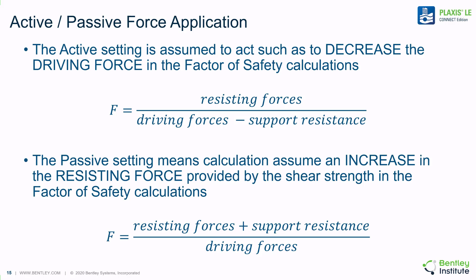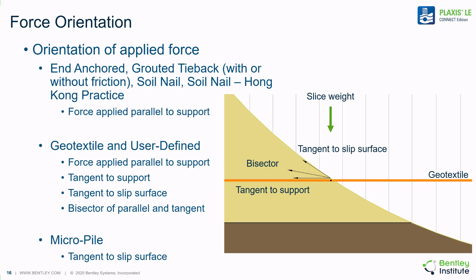Each loading condition may be specified as active or passive in the respective dialog. The active or passive specification determines whether the support resistance is utilized in the equation to decrease the driving forces — i.e., it is active — or to increase the resisting forces — i.e., it is passive. The orientation of the force is determined for end-anchored supports, grouted tiebacks, soil nails, and micropiles as being parallel to the support, or tangent to the slip surface for micropiles. A number of force orientations, including tangent to the slip surface, tangent to the support, or a bisector, can be specified for geotextiles and user-defined supports.